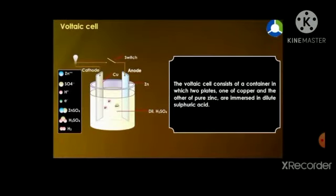Here we can see the setup of Alessandro Volta. In the setup, the Voltaic Cell consists of a container in which two plates, one of copper and the other of pure zinc, are immersed in dilute sulphuric acid. This dilute sulphuric acid is called the electrolyte. The zinc rod and the copper rod are called the electrodes.